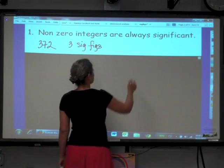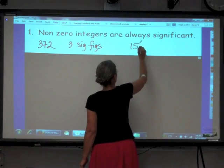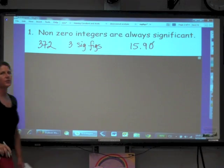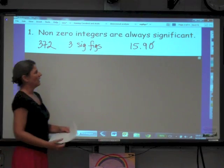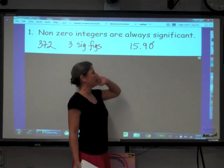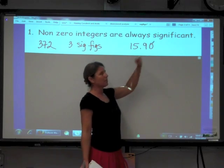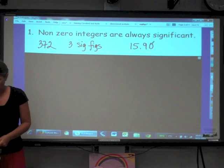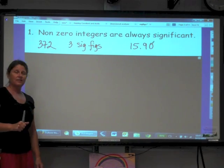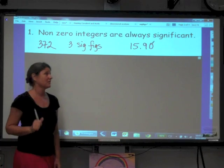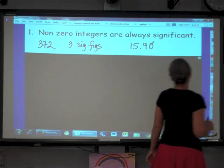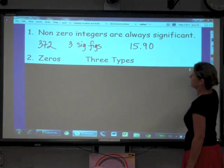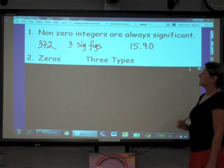What about this number 15.90? How many significant figures in this thing? Well, I have one, two, three non-zero integers. But what about that zero? Is that zero significant? Well, little did you know, there are numerous types of zeros. So let's look at our rules here before we make a decision about how many significant figures this number has.